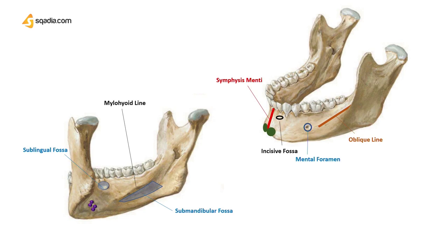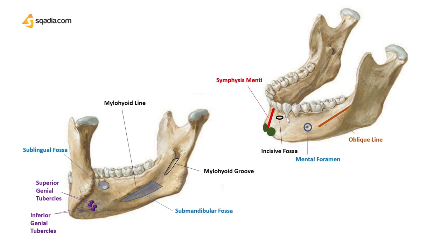Focus on the genial tubercles — these are bony elevations: two superior and two inferior tubercles. The mylohyoid groove can be traced charting on the ramus and sliding onto the body. Now coming to the two borders: the upper border is the alveolar border, with sockets for your teeth to fit in. Tracing the lower border — the base — you will notice the ovoid depression called the digastric fossa, for accommodating the anterior belly of the digastric muscle.